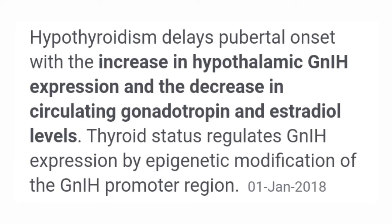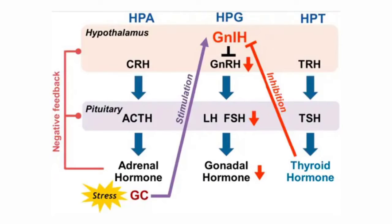There is a decrease in circulating gonadotropins and estrogen levels. Hypothyroidism leads to increase in gonadotropin inhibiting hormone, which leads to decreased GnRH and eventually decreased gonadotropins. Finally the gonads do not respond and estrogen is not produced, so suppression of puberty occurs and pubertal delay is seen.